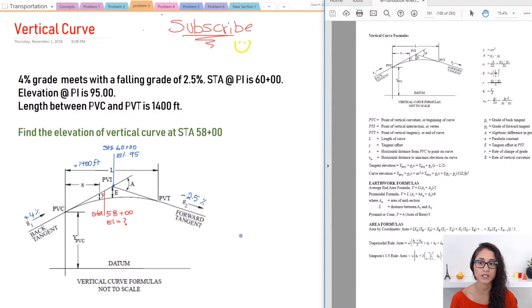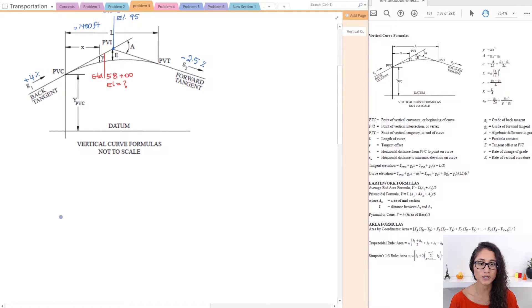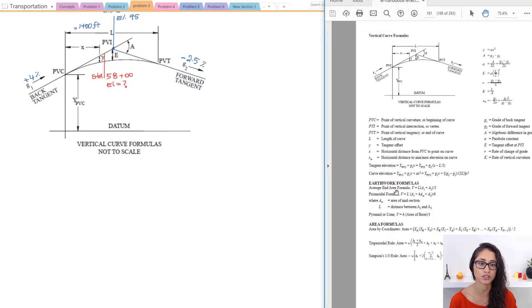So before we start I just want to say that I got a very similar question on my test so make sure you guys have a good understanding of this problem. So the first thing I would do is look up the equation so that we can solve for this elevation. So if you go to page 182 you'll see here it's given to you the curve elevation which is equals to elevation PVC plus G1 times X plus A times X squared. So that's the equation we're going to use. That's the equation that you should use whenever you are asked to find an elevation at a given point.